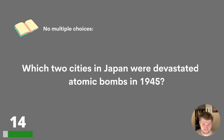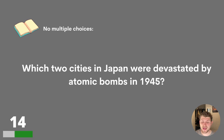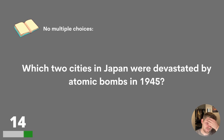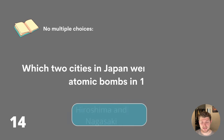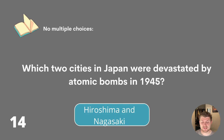Question fourteen. No multiple choice again. Which two cities in Japan were devastated by atomic bombs in 1945? The answer is Hiroshima and Nagasaki.